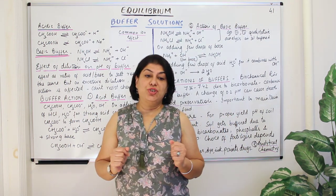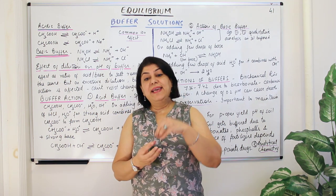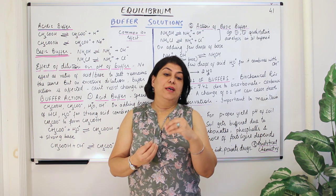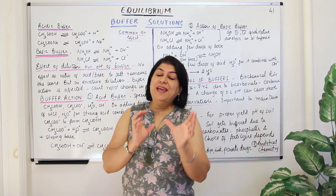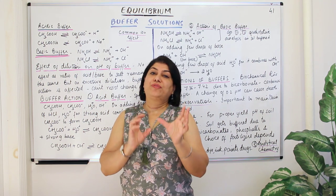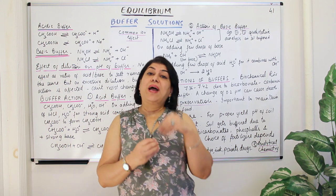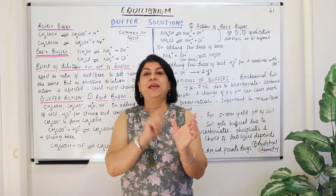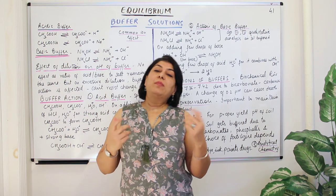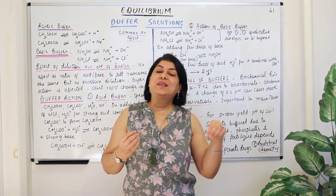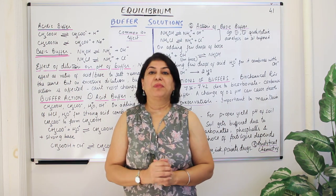I also told you about buffer capacity: how much of a strong concentrated acid or base causes the pH of one liter of the buffer to change by one unit. How much acid you must add to decrease the pH by one, and how much base to increase it by one — that is the buffer capacity.